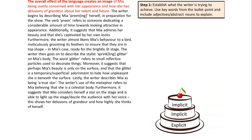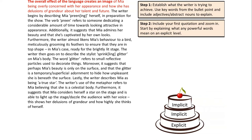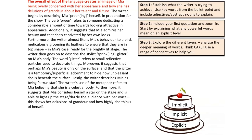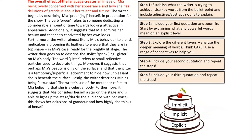Now, step one: we've established what the writer is trying to achieve in the topic sentence, using keywords from the bullet point to keep the response focused. You want to include adjectives or abstract nouns to help explain the effect. Step two: include your first quotation and zoom in — start by explaining what any powerful words mean on an explicit level within their given context. Step three: explore those different layers — analyze the deeper meanings of words, think cake, and use a range of connectives to help you. Step four: include your second quotation and repeat the steps. Step five: include your third quotation and repeat the steps — as easy as that.